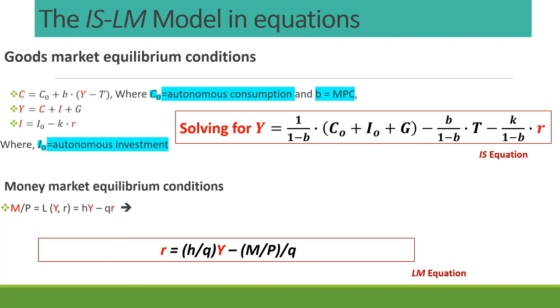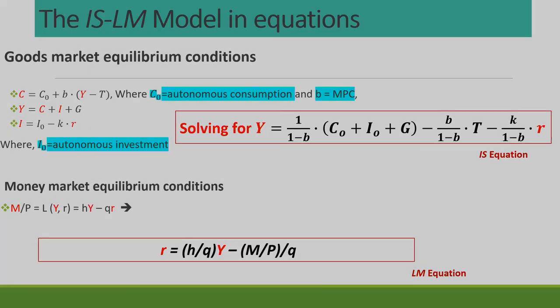The equilibrium condition in the money market: we assumed that money supply is determined by the central bank.